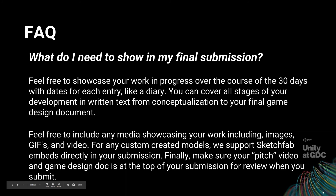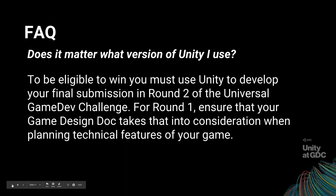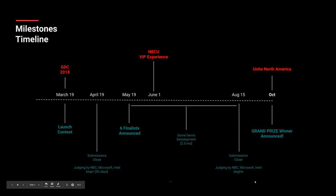The final submission consists of the pitch video, the GDD, and any other supporting materials. Phase one closes on the 19th of April. On the 19th of May the six finalists are announced. Then there's about two and a half months of development time to create a vertical slice, and all phase two submissions close on the 15th of August. The grand prize winner will not be announced until the Unite America conference.